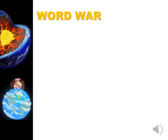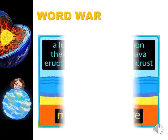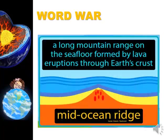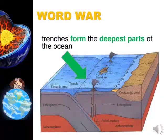Next up on our word war is mid-ocean ridge and trench. These two are found away from each other. A mid-ocean ridge is a long mountain ridge under the ocean formed by eruptions — it is the birthplace of new ocean floor and crust. Trenches are the deepest parts of the ocean. The deepest trench is the Marianas Trench. We also have our own trench, called the Philippine Deep, which is the fourth deepest in the world.